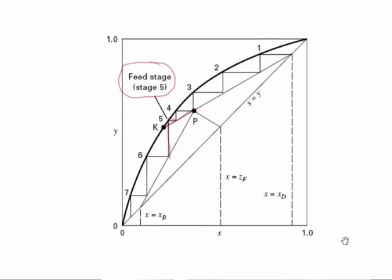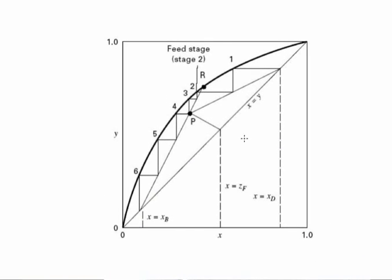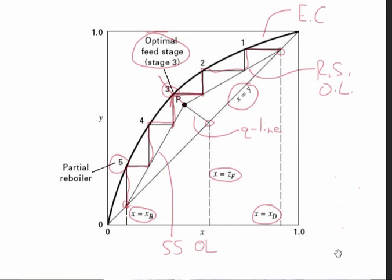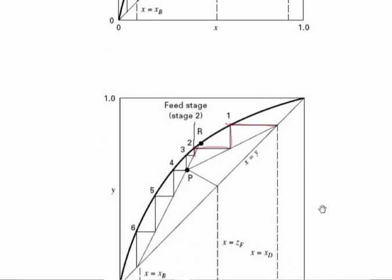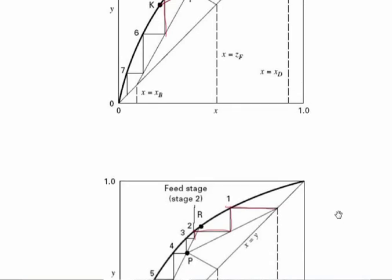The same can be said if we place the feed stage above the Q line transition. Here we have a similar plot, but now we step one equilibrium stage on the rectifying section operating line, and then go from the rectifying section operating line to the equilibrium curve to the extended stripping section operating line. So the second stage from the top of the column is the feed stage — it starts on one operating line, goes to the equilibrium curve, then steps down to the second operating line. Here we require nearly six equilibrium stages, again with the bottom stage being the partial reboiler, in contrast to the system where we step exactly as we cross the Q line, which requires only five equilibrium stages. So you need more stages if you transition above the Q line, and you need more stages if you transition below the Q line.